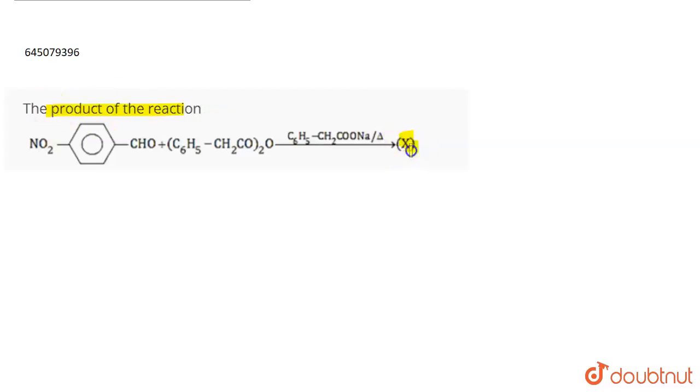Now you have to find out X in this case. So here we have NO₂-C₆H₅-CHO, then C₆H₅-CH₂-CO-O-CO-CH₂-C₆H₅, and C₆H₅-CH₂-COONa, and heating it forms X.